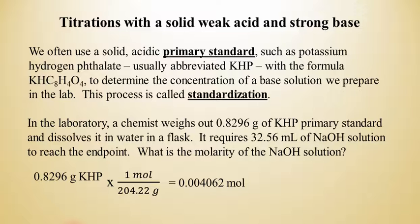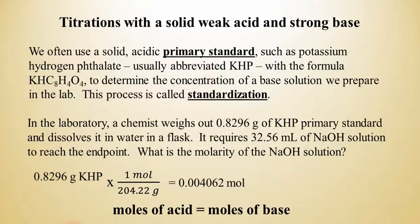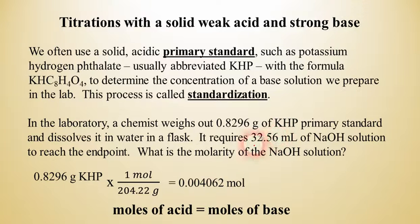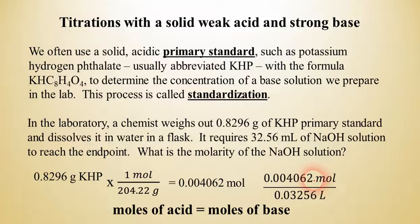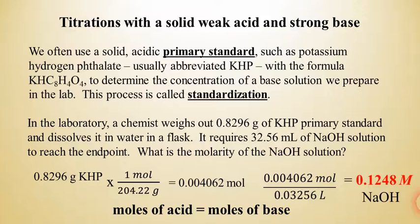At this point we have to realize that in an acid-base titration, the moles of acid equals the moles of base. So 4.062 × 10⁻³ moles of KHP acid means we also have that many moles of sodium hydroxide base. We divide by the volume used — 0.03256 liters — and find that the sodium hydroxide is 0.1248 molar. It's a very straightforward process and one of the first things students do in an analytical chemistry lab: learn how to standardize a solution of sodium hydroxide.